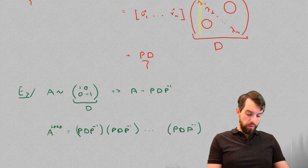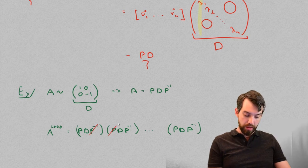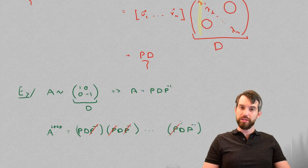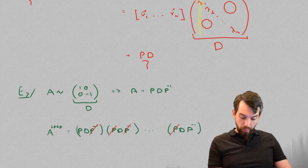But notice that when you write them this way, you've got this P inverse and this P. You've got a P inverse and the next P and all the way along. It keeps on cancelling.